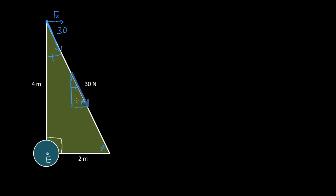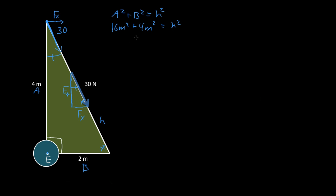Knowing that, we can treat it as a much smaller similar triangle. If we can find the length of the hypotenuse of this smaller triangle, we can get Fy and Fx. We'll first get the hypotenuse using the Pythagorean theorem: a² + b² = h². With a = 4 meters and b = 2 meters, we get 16 + 4 = 20 meters squared. Taking the square root gives us the square root of 4 times the square root of 5, which equals 2√5 meters.